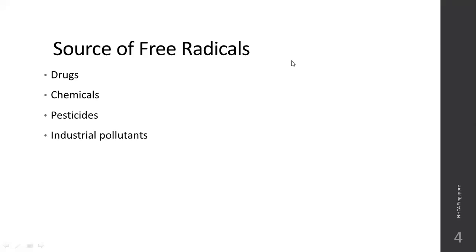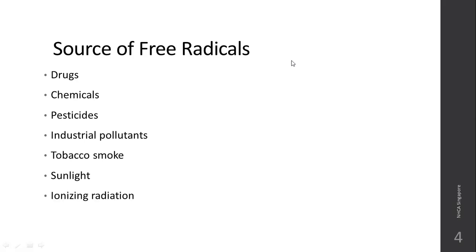Industrial pollutants depend on where you are staying — water quality, soil quality, and air quality. Tobacco and smoking are also sources. Sunlight, when exposed for a long duration, and ionizing radiations like gamma rays and X-rays — especially if you are working in a radiological department — are further sources of free radicals.